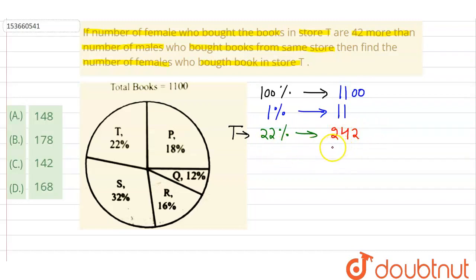But what do you say? This is 242 books. These books are sold. They have sold some to males and some to females.